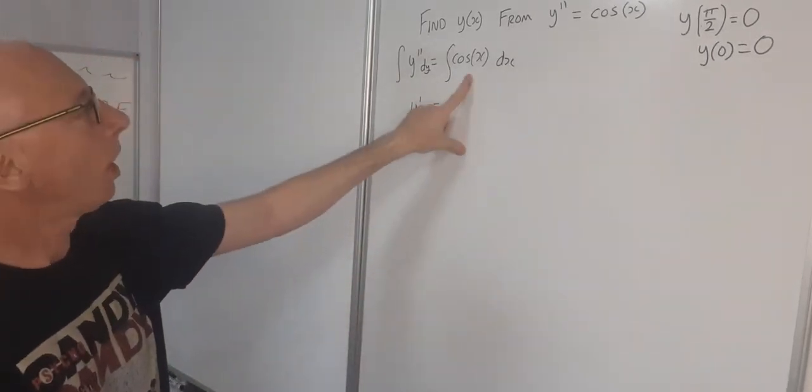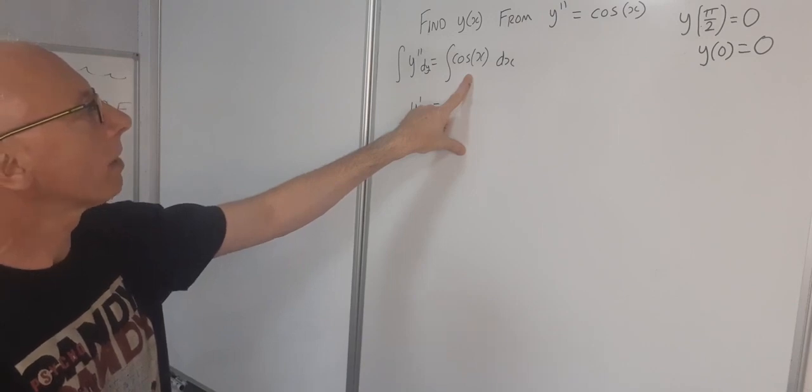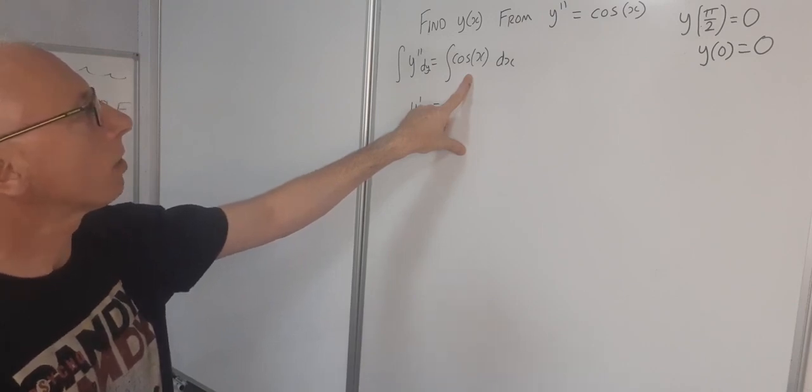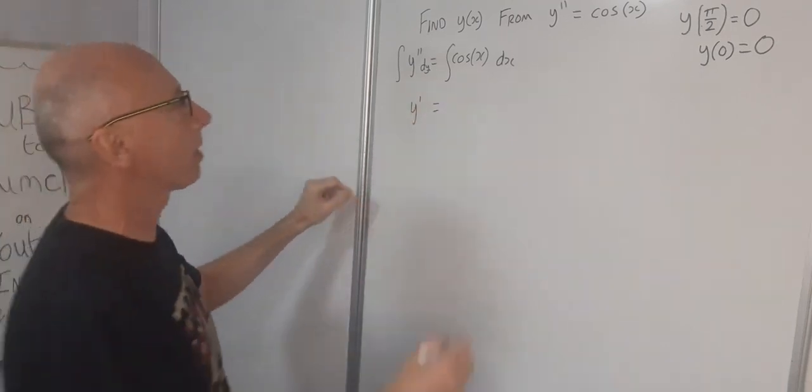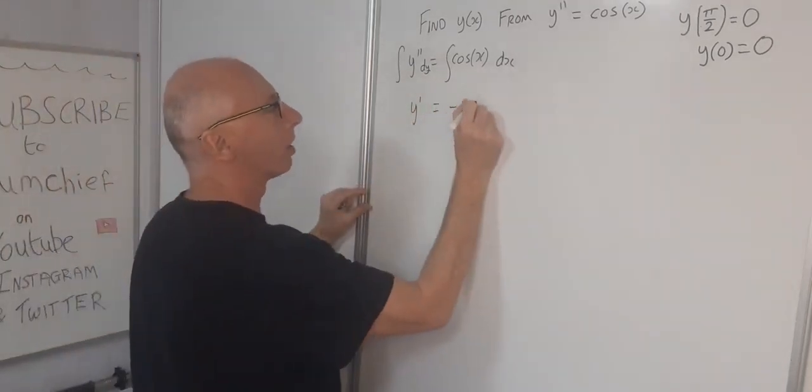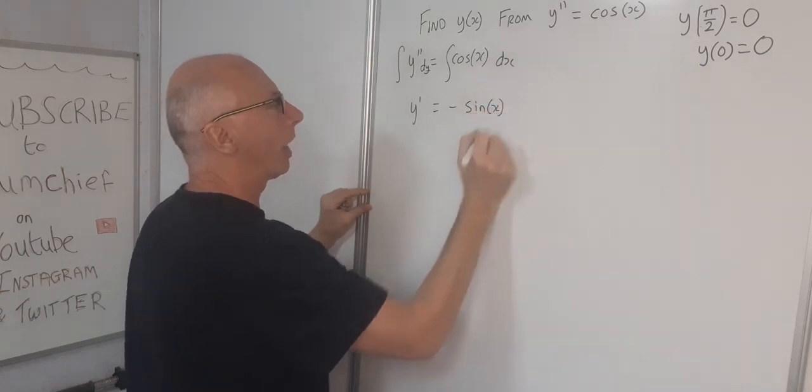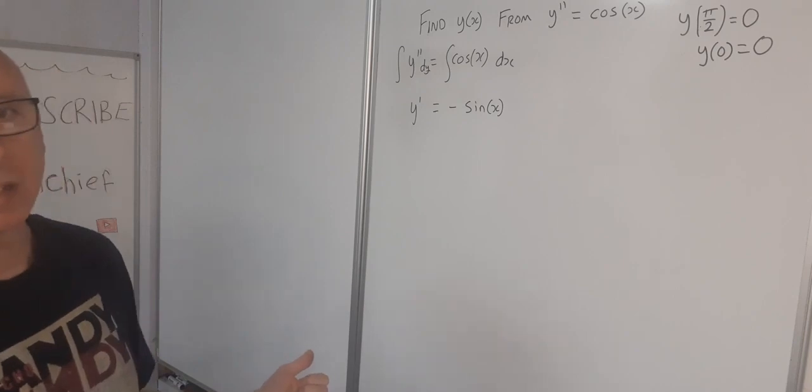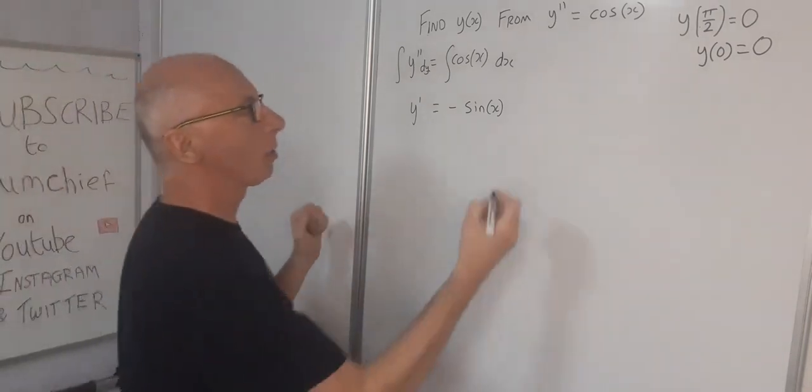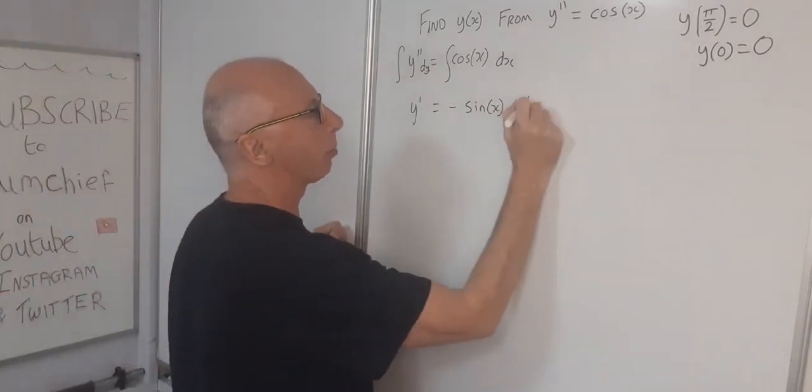Now the integral of cosine x, the integral of that is minus sine of x. And then alongside of that we need to add our arbitrary constant, so plus a.